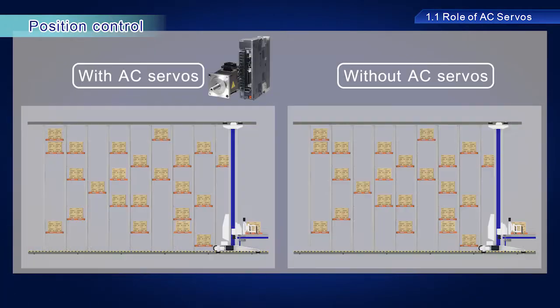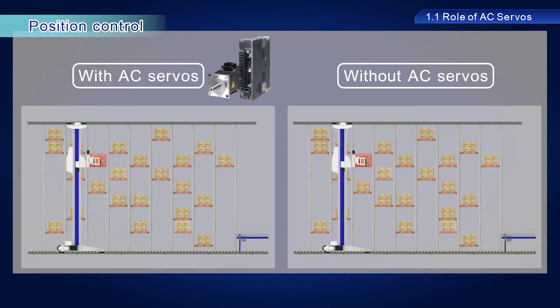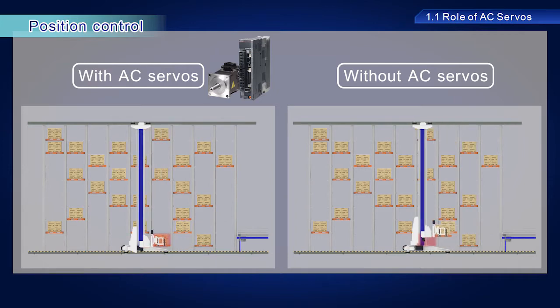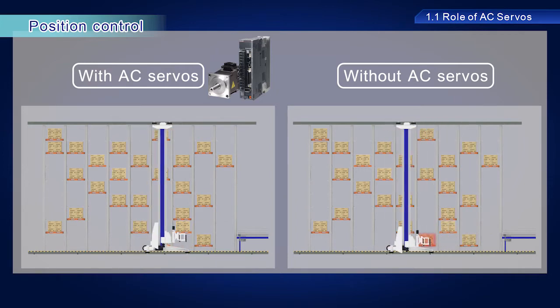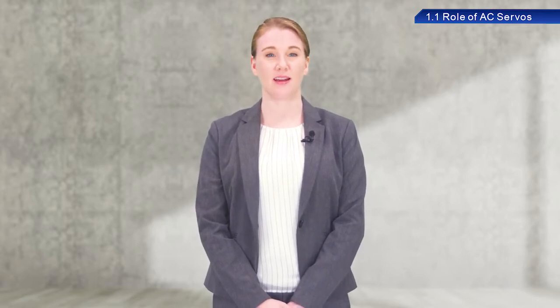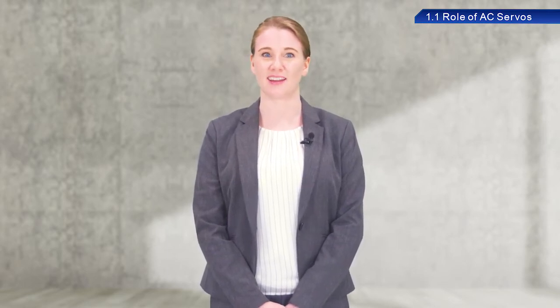What would happen in this scenario without the use of AC servos? Objects are not transported to specific locations or positions, resulting in ineffective and inefficient use of the warehouse. AC servos are capable of position control at resolutions of micrometers — approximately the thickness of a strand of human hair — providing control to levels of precision undetectable to the human eye.